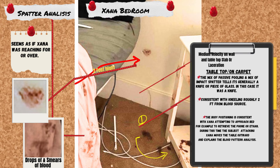Medium velocity impact spatter — secondary pattern. Fine droplets, 1 to 4 millimeters, on the wall and tabletop, with tails pointing downward and slightly outward. Angle approximately 60 to 80 degrees from horizontal. Most spines and tails converge toward the floor pool, suggesting origin from a point approximately 2 to 2.5 feet above the ground, offset 6 to 12 inches from the wall. No high-velocity mist, e.g. gunshot residue, or cast-off arcs visible. Inference: likely from a blunt force or stab impact, causing blood to atomize at 5 to 25 feet per second — could be from a fist, elbow, or knife thrust dispersing blood on contact.